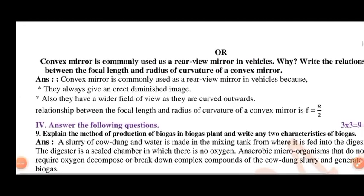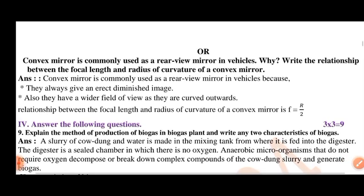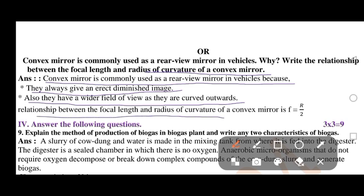Convex mirror is commonly used as a rear view mirror in vehicles. Write the relationship between the focal length and the radius of curvature of a convex mirror. They have a wider field of view as they are curved outwards. The relationship between the focal length and radius of curvature of a convex mirror is f equal to r by 2.